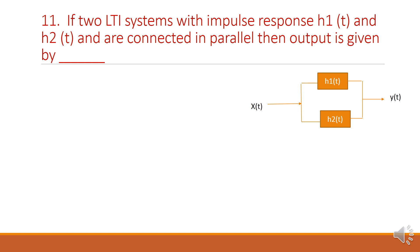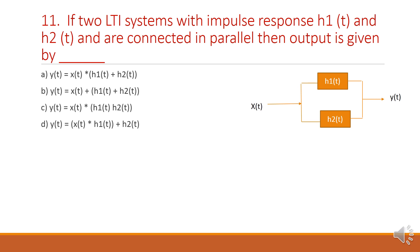Next question: if two LTI systems with impulse response H1 of t and H2 of t are connected in parallel, then the output is given by? The two systems are in parallel, so we write H1 of t plus H2 of t. This combination is in series with X of t, so we write the convolution symbol. Therefore Y of t equals X of t convolution with (H1 of t plus H2 of t). The answer is option A.